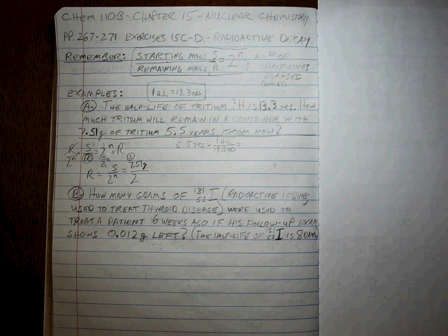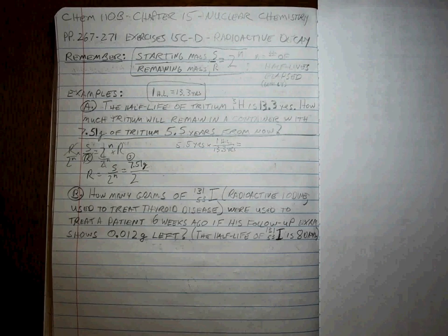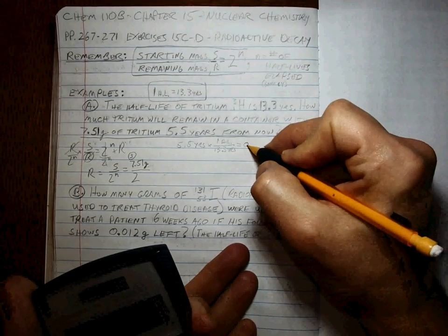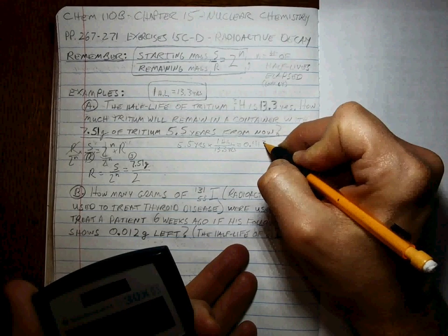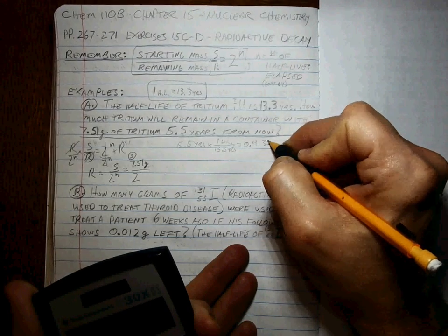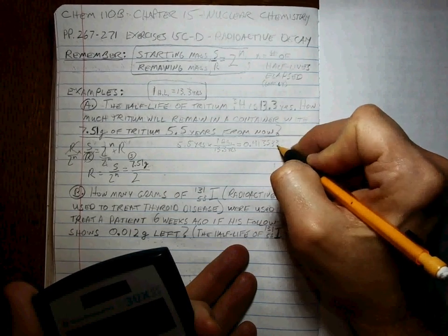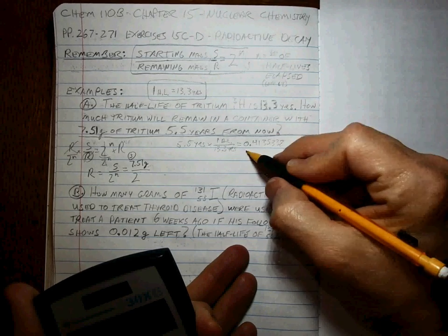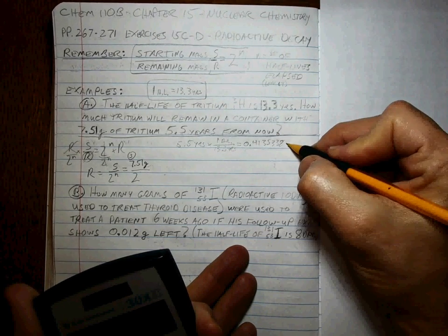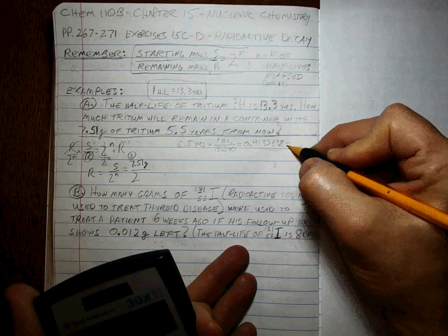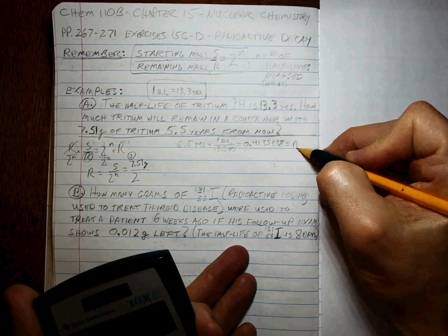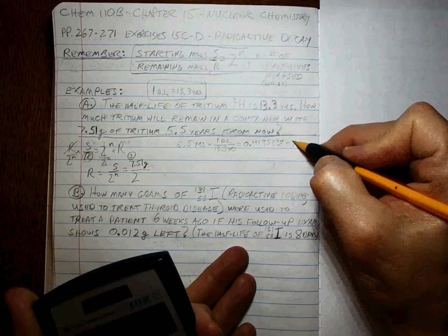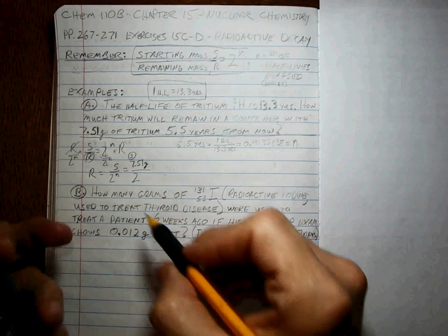What is 5.5 divided by 13.3? 0.4135338, taking lots of sig figs. That's the number of half-lives that have gone by in 5.5 years. That's equal to N. So that's how we solve for N.